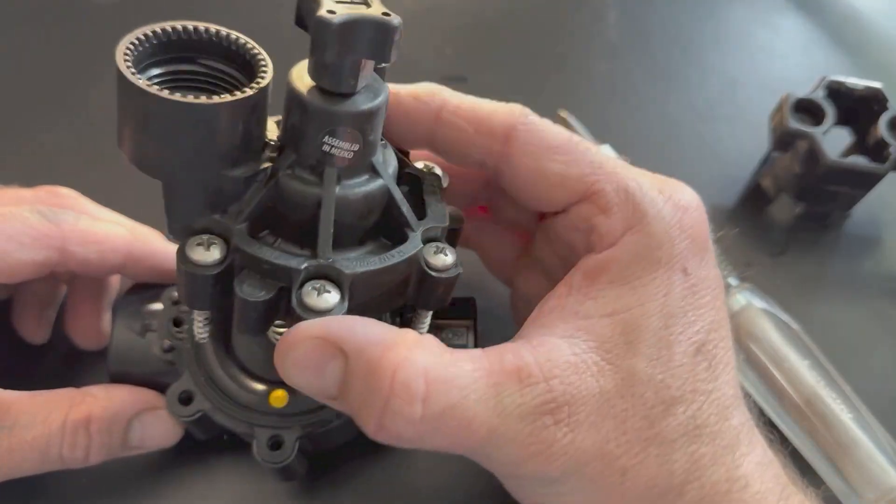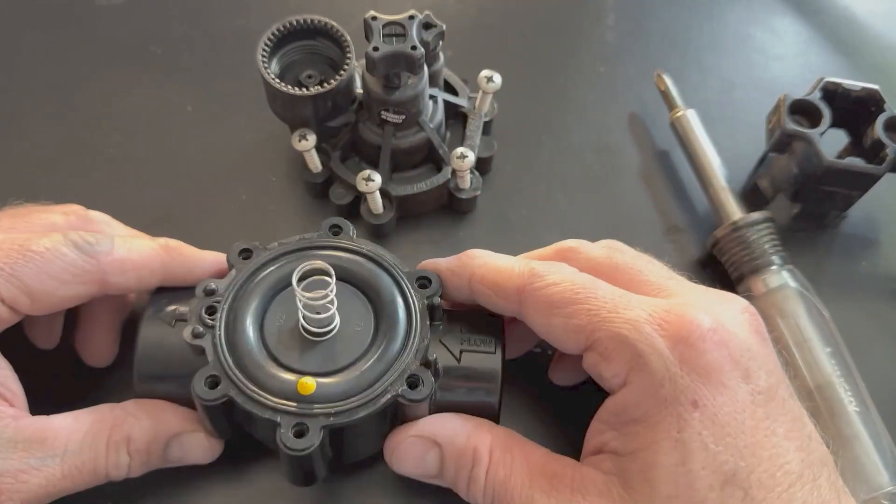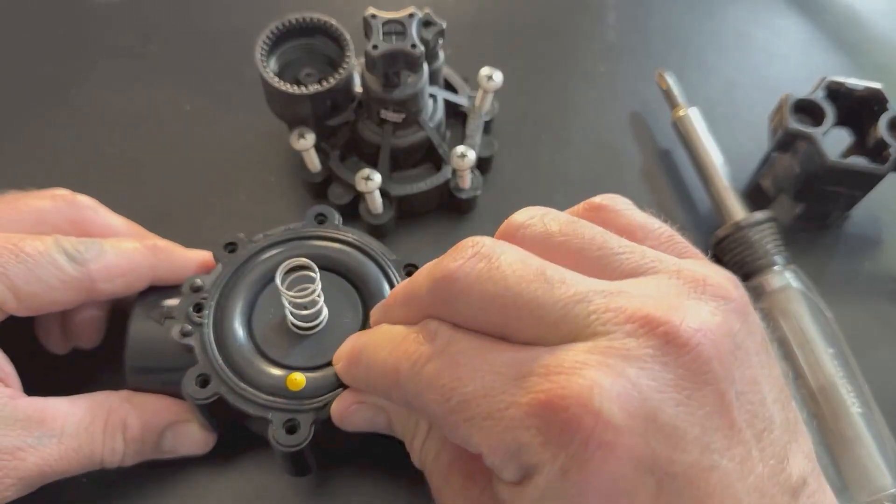Once you loosen all the screws, you can take the top right off. Don't lose your screws. Now you've got access to the diaphragm.